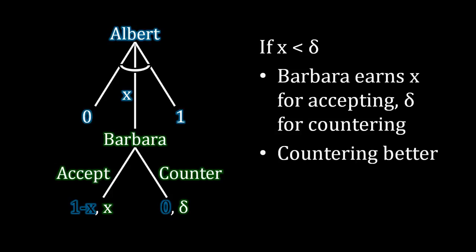So now, if Albert makes an offer x less than delta, Barbara is earning delta for countering and only x for accepting. So in that case, countering is better, which means if Albert makes an offer less than delta, now Barbara has a credible threat to reject that offer, which means now Albert cannot deny Barbara the entire surplus or any surplus at all, because if he tries doing that, Barbara is going to reject that offer.